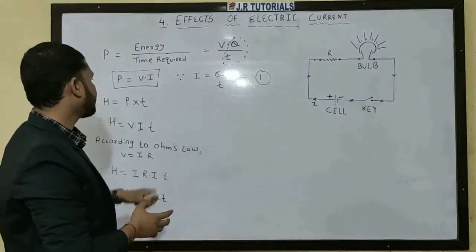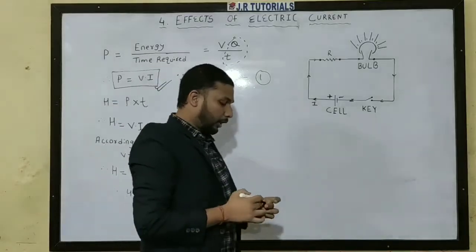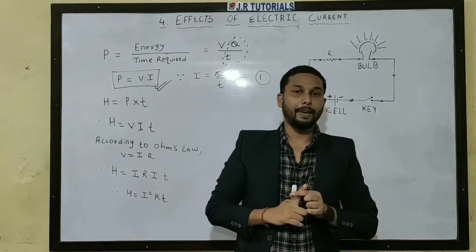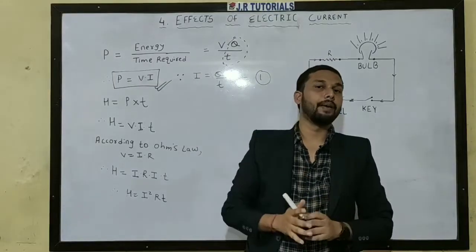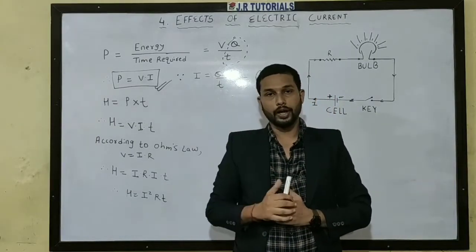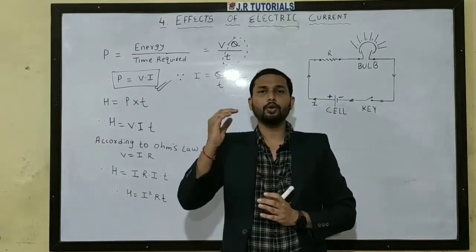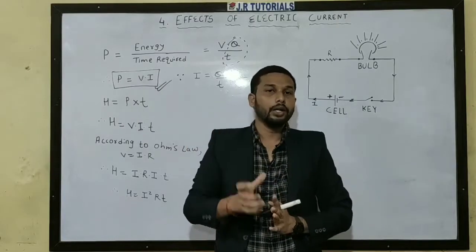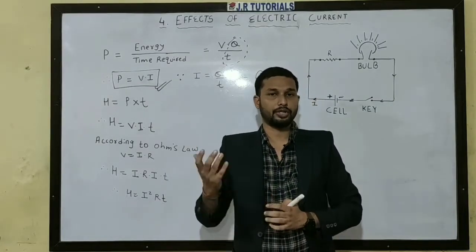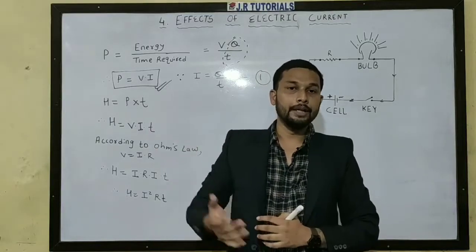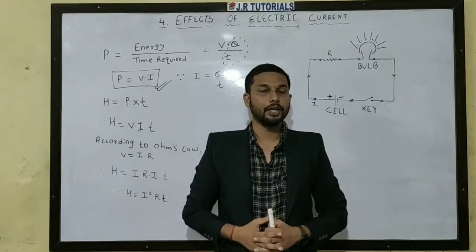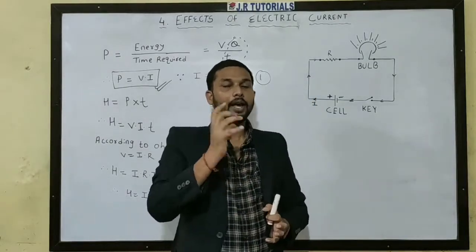Now we have talked about electric power. The chapter name is effect of electric current. So what can be the effect of electric current? The first effect is related to the electric bulb. When an electric bulb has a continuous flow of current, what happens? When we put it in our hand, we feel it is warm. Heat is generated. And it is not just in the electric bulb — in every electric appliance, like TV, fridge, and washing machine, continuous current flow produces heat. This heat is produced because of the electric current which is continuously supplied. This is the basic effect of electric current: heat is generated.